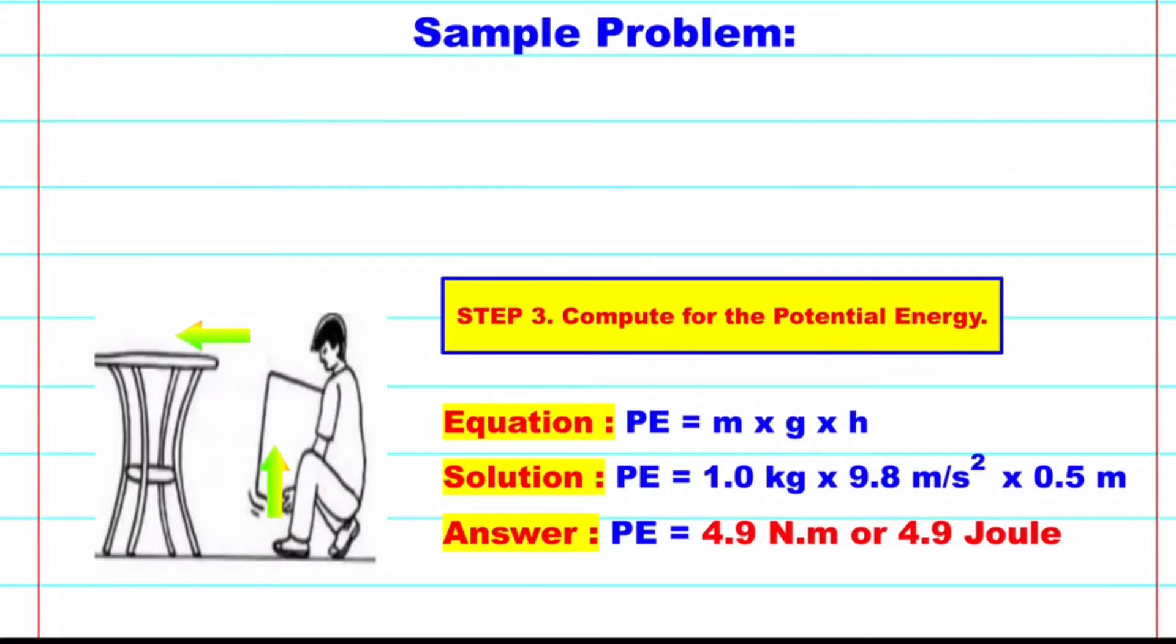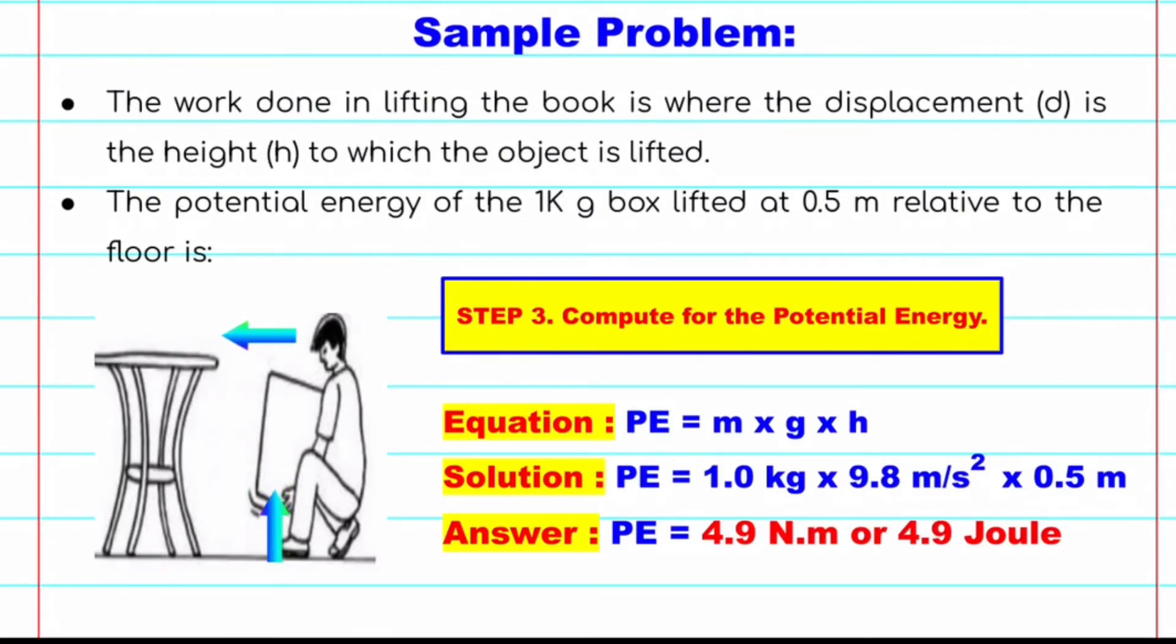Work is equal to force times distance. This shows that the work done in lifting an object is also equal to the potential energy gained by the object. So for our step 3, let's compute for the potential energy. Applying the GRESA method, we will proceed to E or equation or formula. PE is equal to mass times gravity times height. Then S for solution, so just plug in the values. And we will have A, the answer. We multiplied all the values, and here we have potential energy is equal to 4.9 Newton meter or 4.9 joule. There you have it.